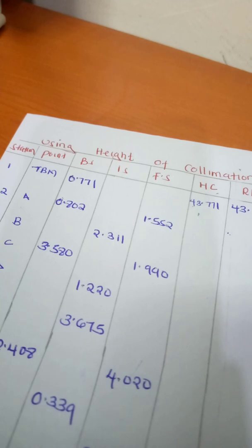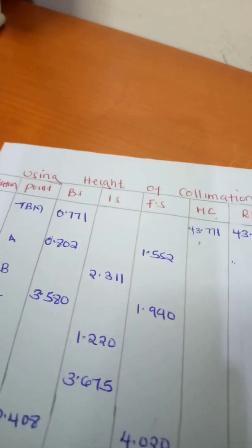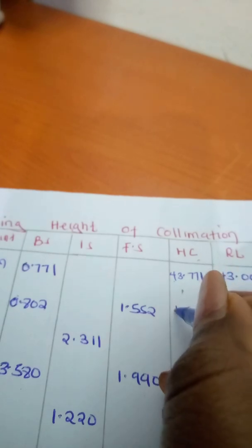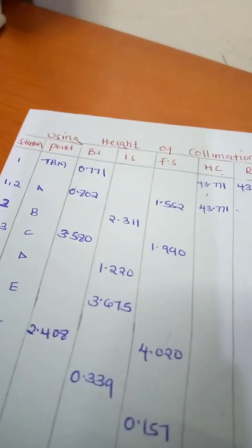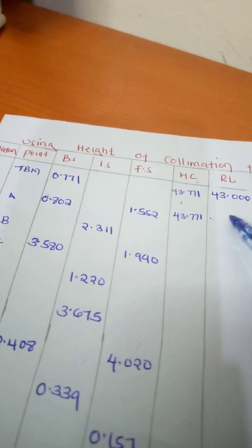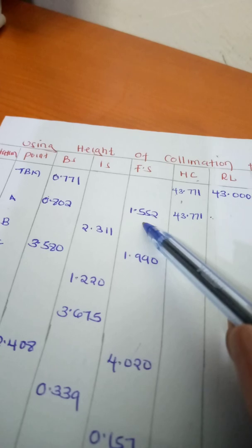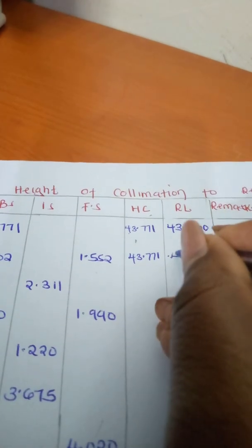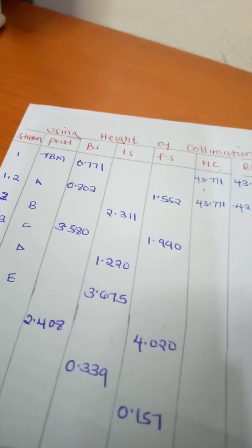The height of collimation does not change — it only changes when we have a change point. So at the second point it remains 43.771. The reduced level will be the height of collimation minus the foresight, which is 43.771 minus 1.552, giving us 42.219.